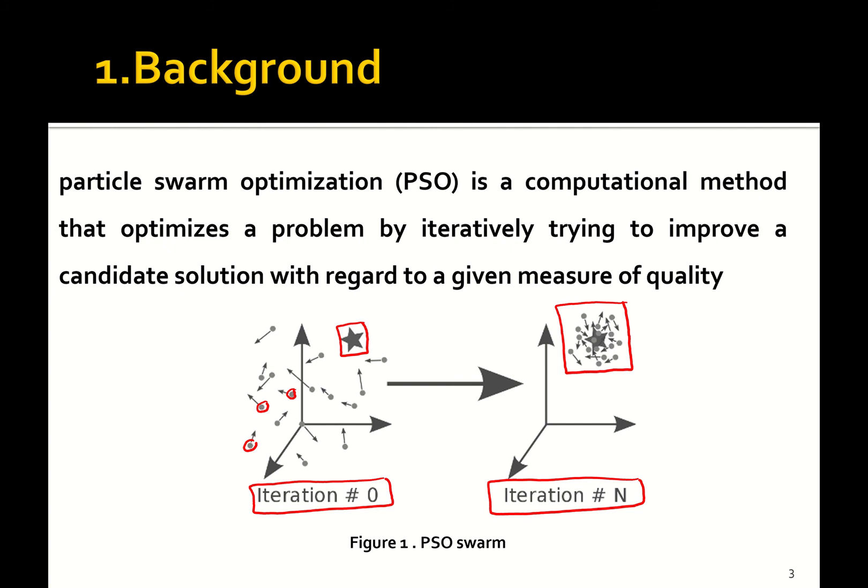However, in the standard PSO, if the leader becomes trapped in local optima, the whole swarm will collapse into that trap. Another limitation is that when PSO works in high-dimensional space, it lacks local search ability and fine-tuning of the dimensions of the search space.